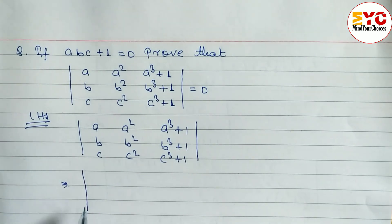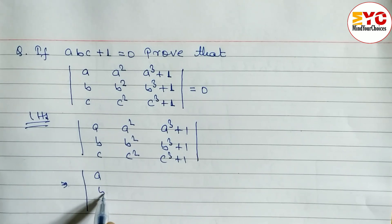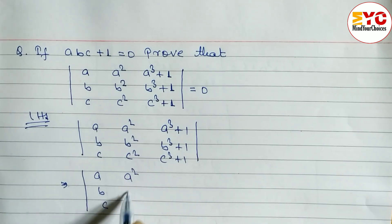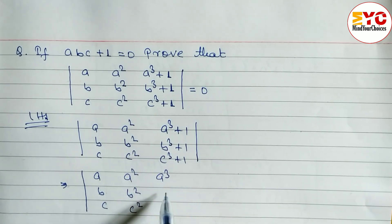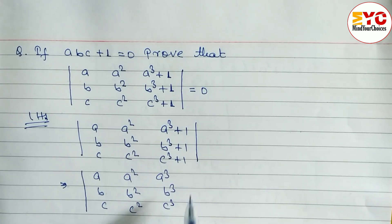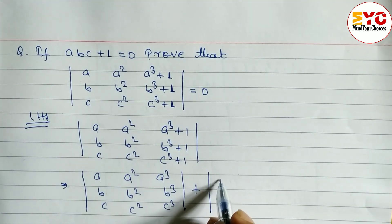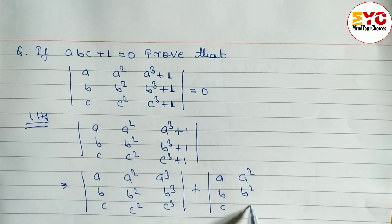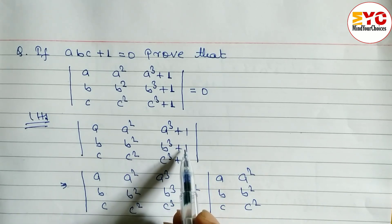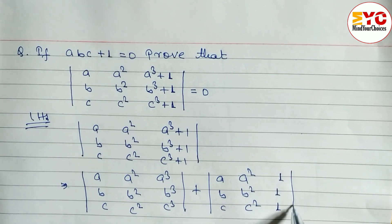We will use the properties of determinants and separate this into two matrices. First matrix: a, b, c; a squared, b squared, c squared; a cubed, b cubed, c cubed. Plus a second matrix: a, b, c; a squared, b squared, c squared; and here we write 1, 1, 1 in the third row.